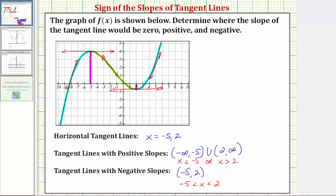Now the reason why we care so much about tangent lines to a curve is that they give us the instantaneous rate of change of the function at a given x value. We'll soon learn that the slope of the tangent line is equal to something called a derivative function value, which again gives us an instantaneous rate of change. I hope you found this helpful.